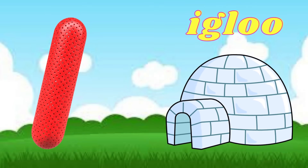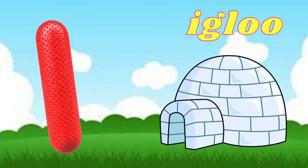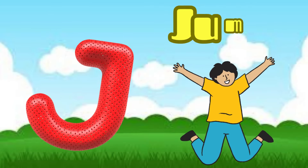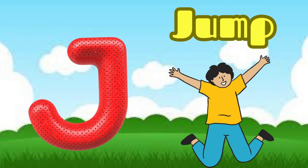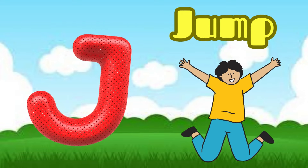I is for Igloo, I-I-Igloo. J is for Jump, J-J-Jump.